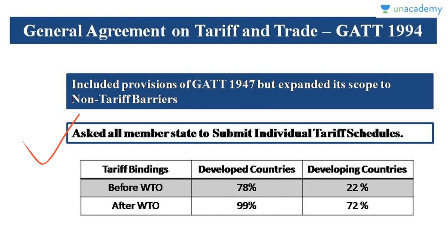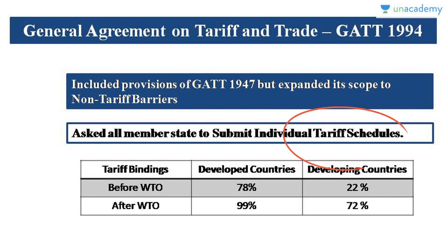When a country signs GATT 1994, it is required to submit a tariff schedule to WTO. A tariff schedule is like a list where a country must mention all the goods it is going to import and specify the maximum amount of tax it can levy on each. For example, India might include goods A, B, and C with maximum tariffs of 10%, 20%, and 25% respectively. India cannot impose tariffs higher than what it has committed in the tariff schedule.